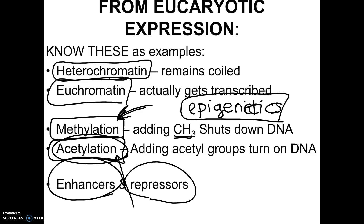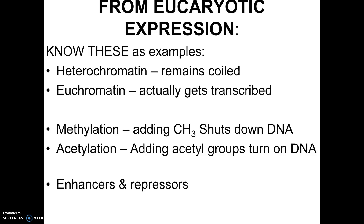Epigenetics refers to ways our body can specifically turn genes on and off under certain circumstances. For example, a mother mouse fed folic acid during pregnancy had areas of DNA methylated that coded for heart disease and obesity, preventing their activation. Twin studies show that twins with identical DNA can have different outcomes — like one getting diabetes — due to environmental factors affecting methylation and acetylation. On the quiz, you'll need to label an operon, match its parts, know definitions, and distinguish inducible versus repressible operons.